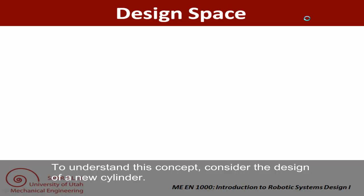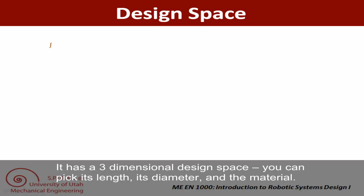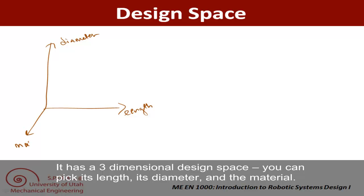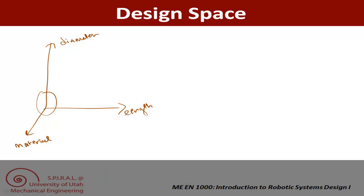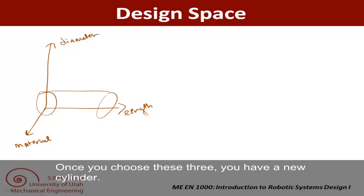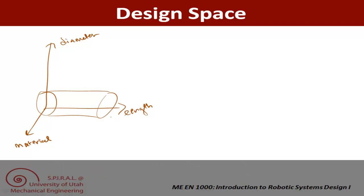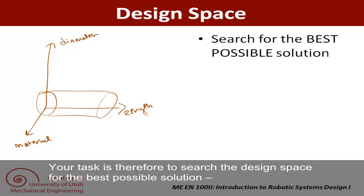To understand this concept, consider a new cylinder. It has a three-dimensional design space. You pick its length, its diameter, and the type of material you are going to make it from. Once you choose all three of these, you have a new cylinder. Your task is, therefore, to search the design space for the best possible solution.